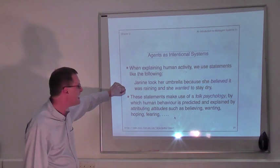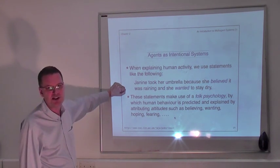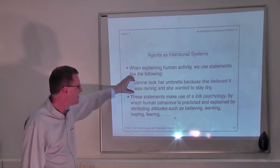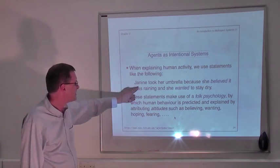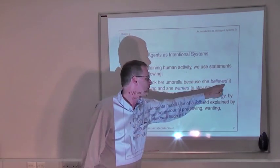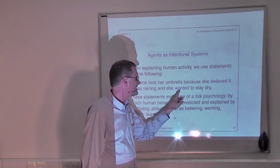Janine took her umbrella because she believed it was raining and she wanted to stay dry. So what we're doing in this sentence here is we're taking an agent, Janine, and we're attributing to her beliefs and desires.